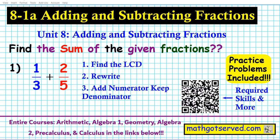Good day students, welcome to madgotserv.com. In this clip we're going to be going over section 8.1a of our series on adding and subtracting fractions. The type of problems we're going to be covering is depicted here — find the sum of the given fractions: one-third plus two-fifths. To review the required skill for this lesson, namely finding the LCD, you can scan the QR code or check the links in the description below. Don't forget we have some practice problems at the end of this tutorial for you to try out.